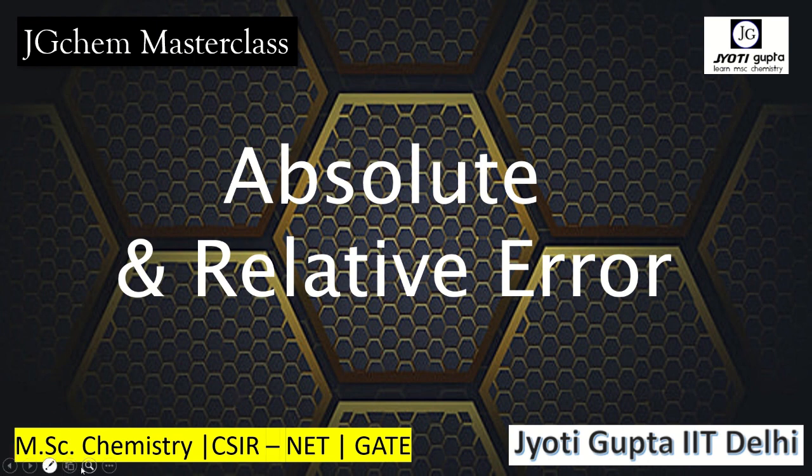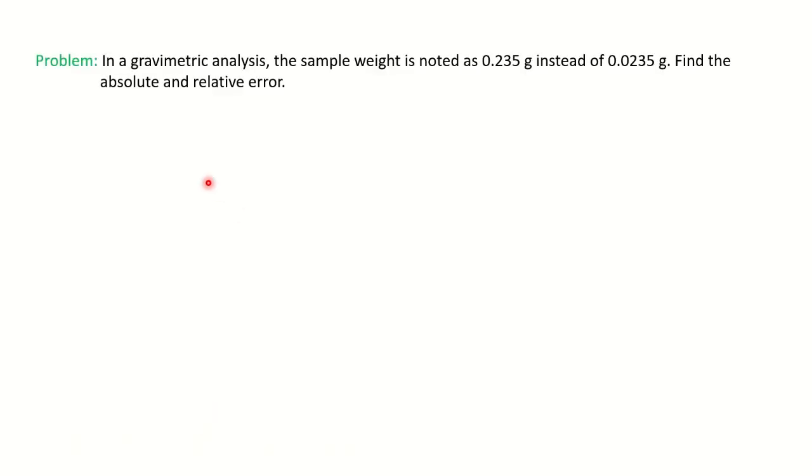The question is taken from M.Sc. previous year chemistry students. The question is: in a gravimetric analysis, the sample weight is noted as 0.235 gram instead of 0.0235 gram. Find the absolute and relative error.